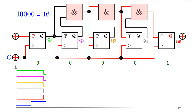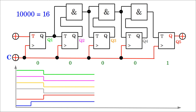The propagation delays of the AND gates don't affect the propagation delay of the counter's output signals, but they do limit the maximum frequency of the external clock signal. The next cycle should not start before all gates have reached their final state according to the output of all flip-flops.